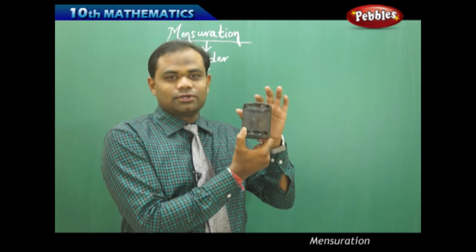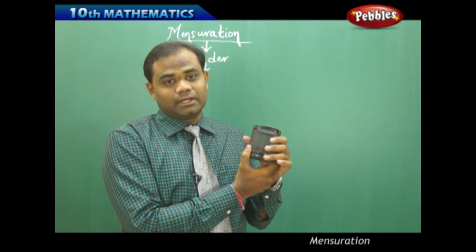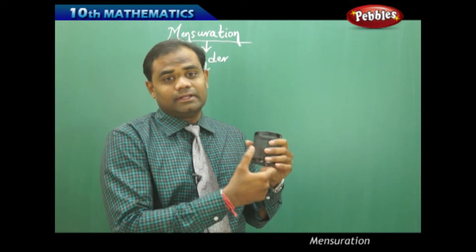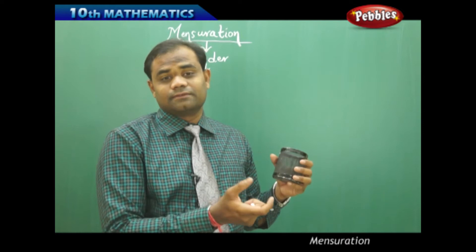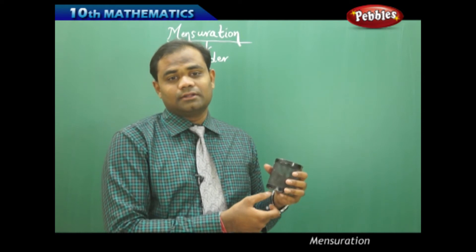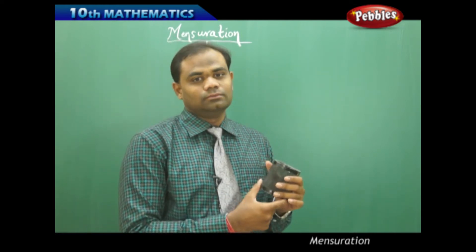Let's see how we can find the lateral surface area or the curved surface area, the total surface area, and the volume of a cylinder.